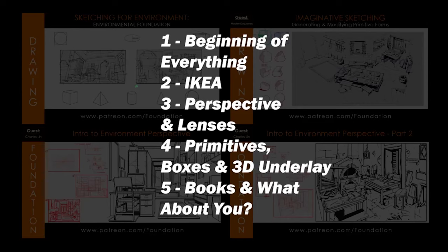The five things I want to discuss today: first, perspective is basically the beginning of everything. Second, there's a great suggestion by Charles Lim to use IKEA photos and showroom photos. Third, the basics of what to look for in terms of perspective. Fourth, lenses and distortion — a big one. Fifth, primitives, boxes, and construction using 3D as an underlay. Please share in the comments what you've learned, what you want to learn more, and how your practice is going, so we can all learn together.